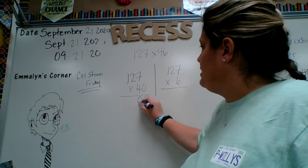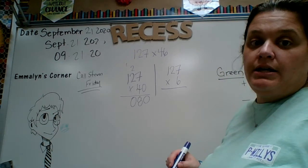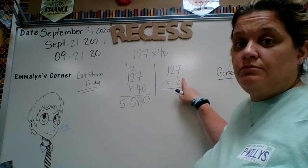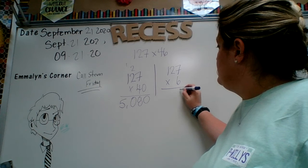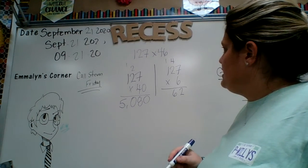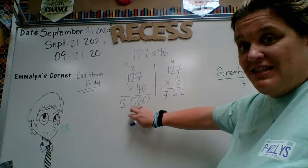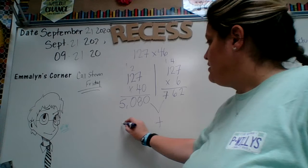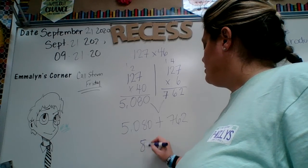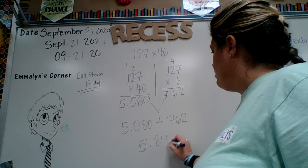4 times 7 is 28 — carry my 2. 4 times 2 is 8, plus 2 is 10 — carry my 1. 4 times 1 is 4, plus 1 is 5. So I get 5,080. Then I do 127 times 6: 6 times 7 is 42 — carry my 4. 6 times 2 is 12, plus 4 is 16 — carry my 1. 1 times 6 is 6, plus 1 is 7. So 762. The partial products added up to the same thing. Adding them together gives 5,842 square feet.